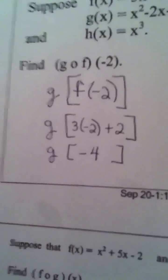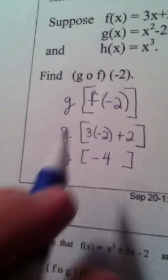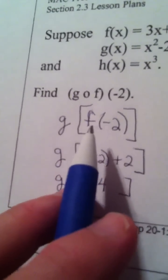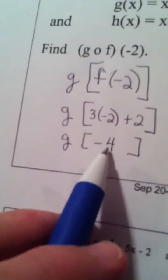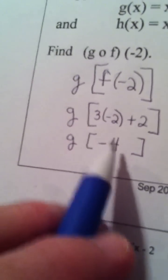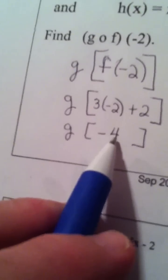So to finish the problem, in other words to start it, I found f of negative 2. f of negative 2 became negative 4. Now what I do is I take the number negative 4 and I plug it into function g.